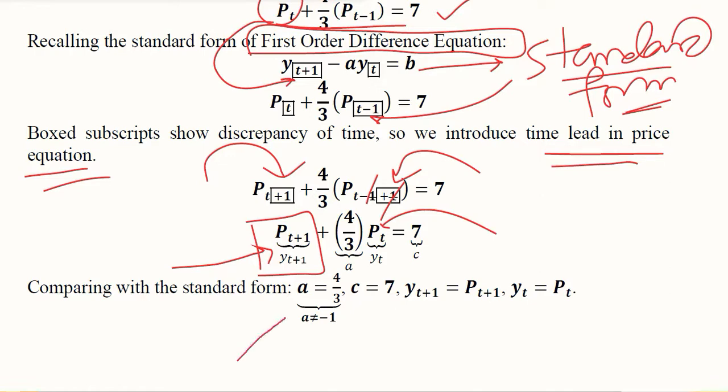The value of a is extracted, the value of c is extracted. Yt plus 1 is instead Pt plus 1, and instead of yt we have Pt plus 1, Pt.